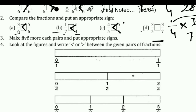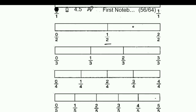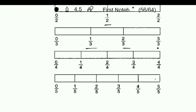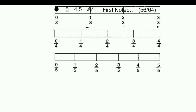Question number 3: make 5 more each pair and put the sign. Look at the figure and write the sign between the given pairs of fractions. It is showing 0 to 1 on the number line, with points marked inside. We have to shade the parts as the question asks, and then compare the shaded parts only to find the answer.